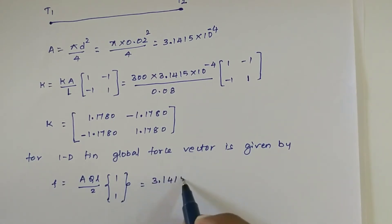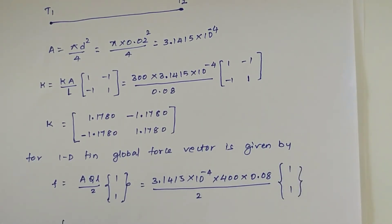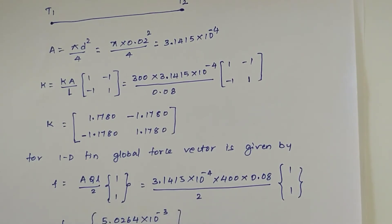A is 3.1415 times 10 power minus 4, Q is given as 400, L is 0.08 divided by 2, times [1; 1]. So global force vector happens to be [5.0264 times 10 power minus 3; 5.0264 times 10 power minus 3].